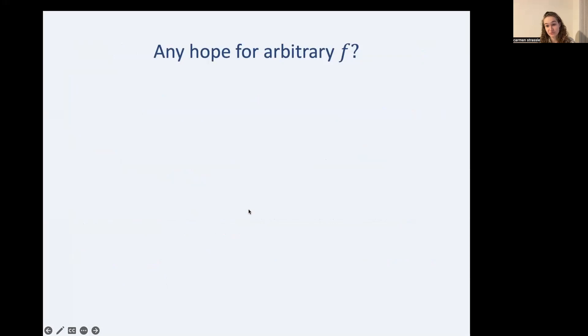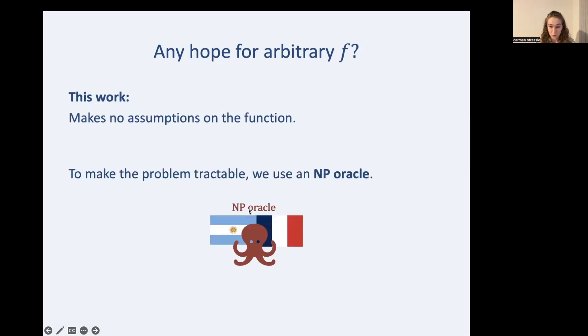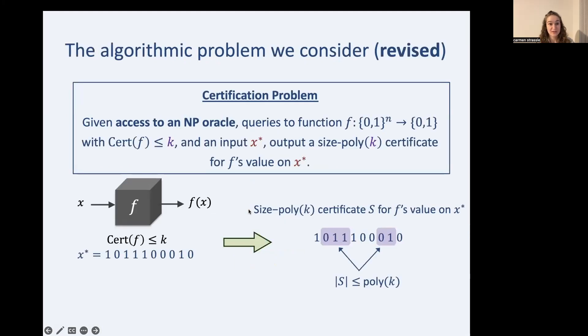So we've seen how useful a simplifying assumption like monotonicity is for this problem. And we've also seen how intractable the general problem is. However, we'd still really like to understand general f because real world examples aren't always going to be monotone. They might be arbitrarily complex. So here we study general f. So for general f, we need some other way to get around intractability. We'll use an NP oracle. In the language of complexity theory, we study this problem's difficulty relative to an NP oracle. I'll be representing the oracle as the octopus that correctly predicted results of the World Cup. But if you prefer, you can think of it as a SAT solver instead. It's up to you.